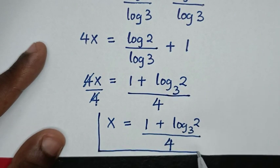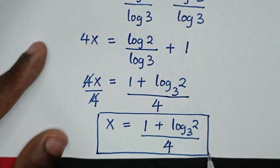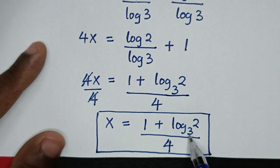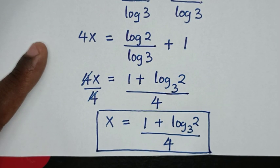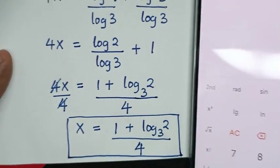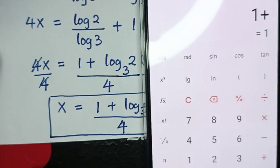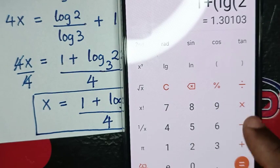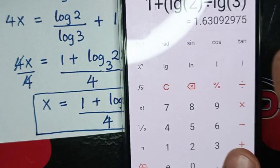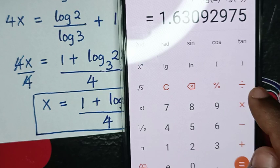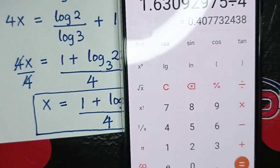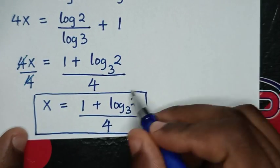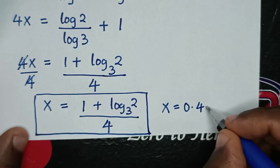Therefore, this is the final answer for the value of x. Now if we want to get the exact decimal value, we substitute log base 3 of 2 — which is the same as log of 2 divided by log of 3 — into the calculator. So 1 plus log of 2 divided by log of 3, then divide by 4, gives 0.4077. So x is equal to 0.4077.